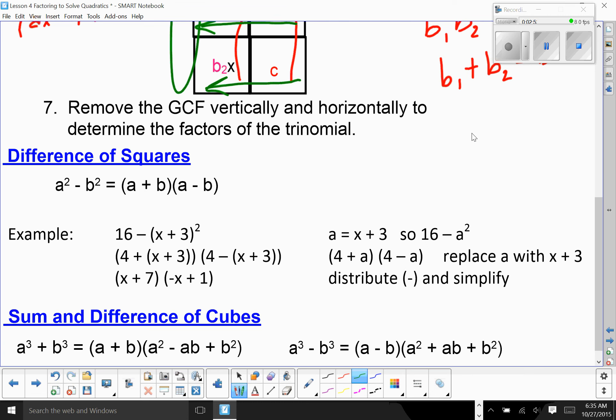You should be able to do things that involve expressions as well. For instance, 16 minus X plus 3 quantity squared, you have a perfect square in the 16, and you have a perfect square in the X plus 3 quantity squared. You square root both. Then you need to distribute the negative after you factor using the pattern, and then you combine your like terms.